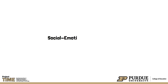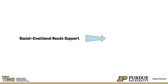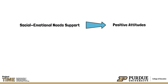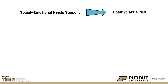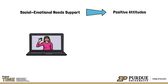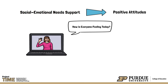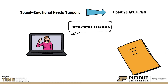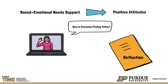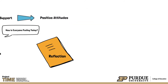Students whose teachers and school environments positively support their social-emotional needs are more likely to have positive attitudes about education and improved academic performance. Because of this, it is beneficial to consider adding daily social-emotional check-ins to routines at the beginning of synchronous online learning classes, or including journaling as a tool for self-reflection and expression during asynchronous activities in online environments.